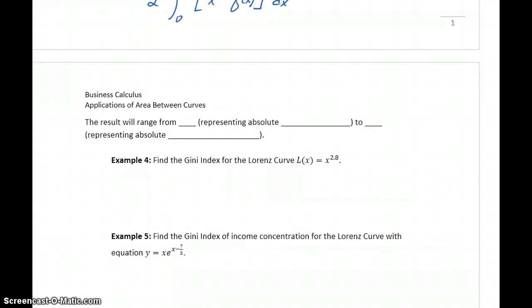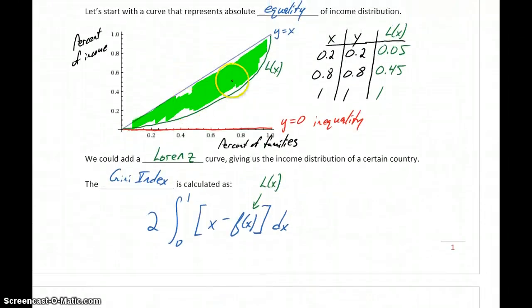So our resulting value will fall in a range somewhere between 0, which would represent absolute equality, because in that case our Lorenz curve is mapped directly onto that line y equals x. Or we could have values as large as 1 for that final result, meaning we have absolute inequality. So if we go back to looking at that picture, the smaller this area is, the closer this curve is to this line y equals x. So the smaller the area, as it gets closer to 0, we get closer to equality. As it gets larger, we're getting closer to this idea of absolute inequality.